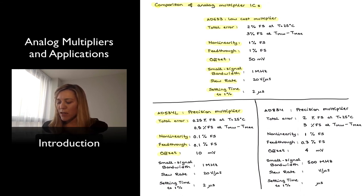In terms of the dynamic characteristics, they are exactly the same as the 633, so 1 MHz bandwidth, 20 volts per microsecond slew rate, and 2 microseconds of settling time.